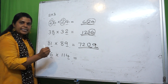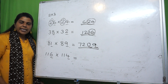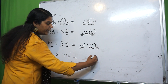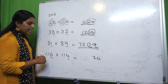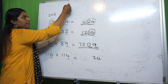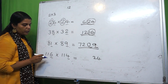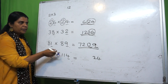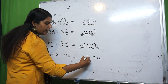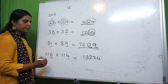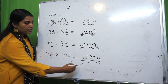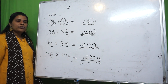Next question: we multiply the ones digits 6 and 4, giving 24. The common tens number is 11, and the next number is 12. So we multiply 11 and 12: 11 times 12 is 132. The final answer is 13224.